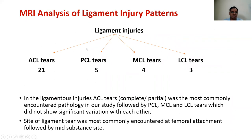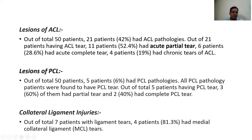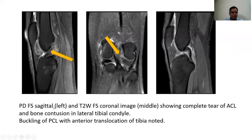Analysis of ligamentous injury patterns: ACL tears in 21%, PCL tears in 5%, MCL tears in 4%, and lateral collateral ligament tears in 3%. ACL tear injuries were the most common, followed by PCL, MCL, and LCL tears. The ligament tear was most commonly encountered at the femoral attachment, followed by the mid-substance site. Acute partial ACL tear was the most common ACL injury pattern, and acute partial PCL tear was the most common PCL pathology. Proton density fat-suppressed and T2-weighted fat-suppressed coronal images showed complete tear of the ACL and bone contusion in the lateral tibial condyle, with buckling of the PCL and anterior translocation of the tibia also noted.